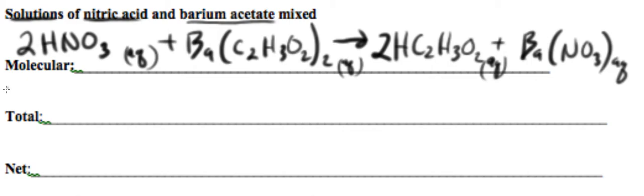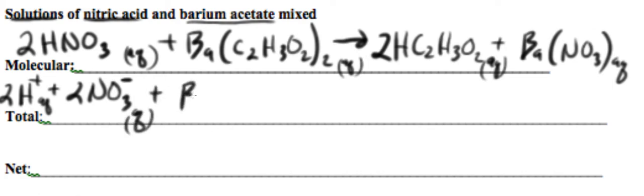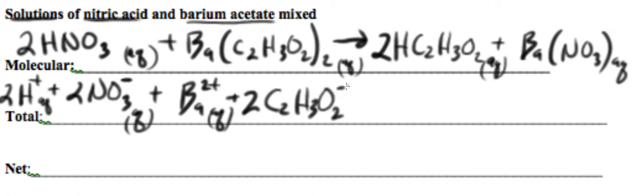Writing out the total ionic equation, we need to know that nitric acid is a strong acid and it ionizes completely, so we write it as ions. Barium acetate is an ionic compound that is soluble, so we're going to write it as ions as well because it dissolves as ions.